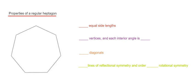So first of all, let's start off with the number of sides. So we have 1, 2, 3, 4, 5, 6, 7. And each side is of equal length.